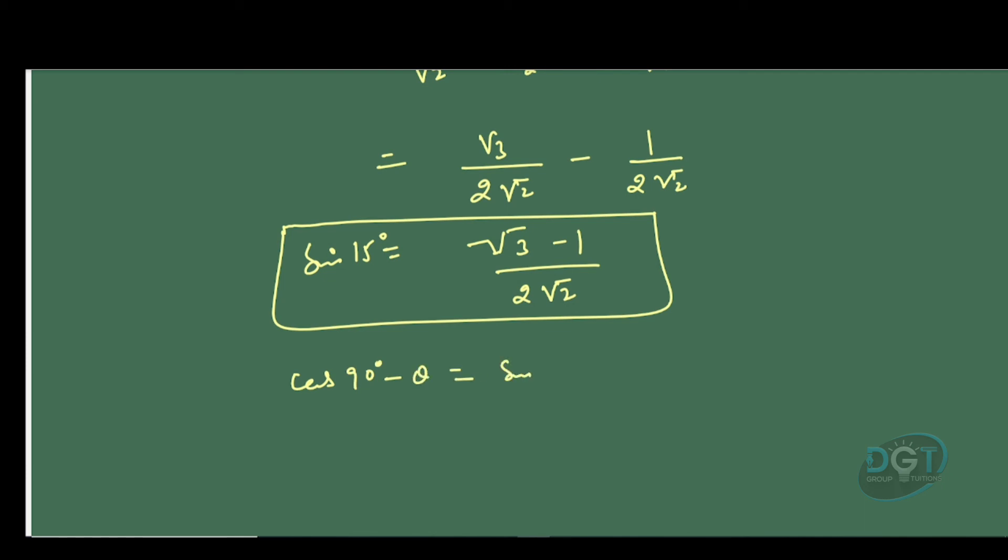Thus, cos 75° equals (√3 - 1)/(2√2). So this is our final answer.